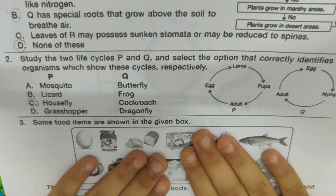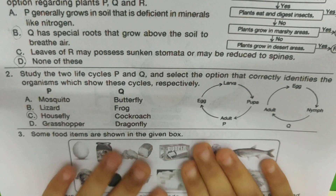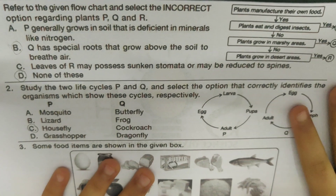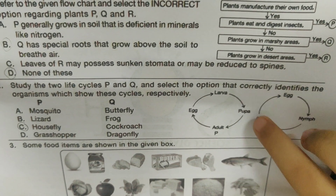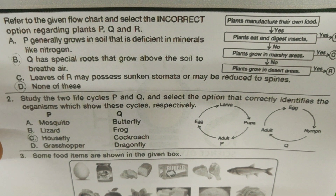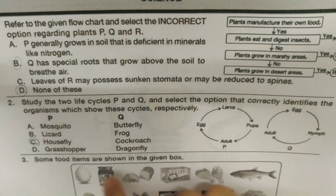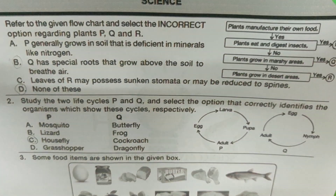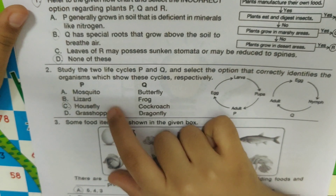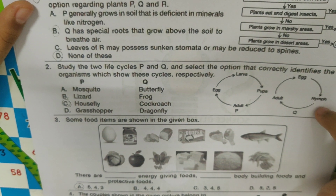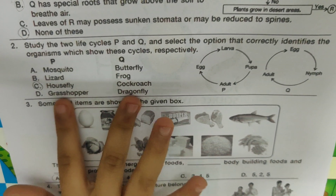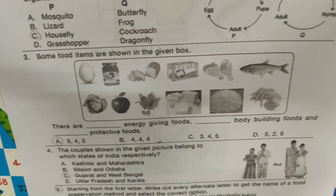Study the two life cycles P and Q and select the option that correctly identifies the organisms. Cycle P shows larva, then pupa, then an adult, then an egg — this is the cycle of a butterfly, but since there's no butterfly listed, P will resemble housefly. An egg, nymph, and adult belongs to a cockroach. So the answer is housefly and cockroach.